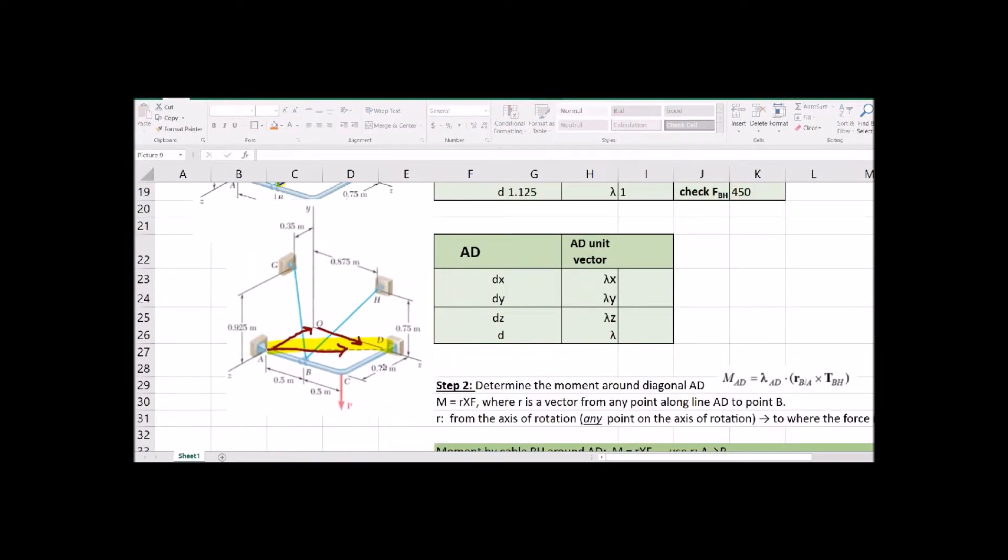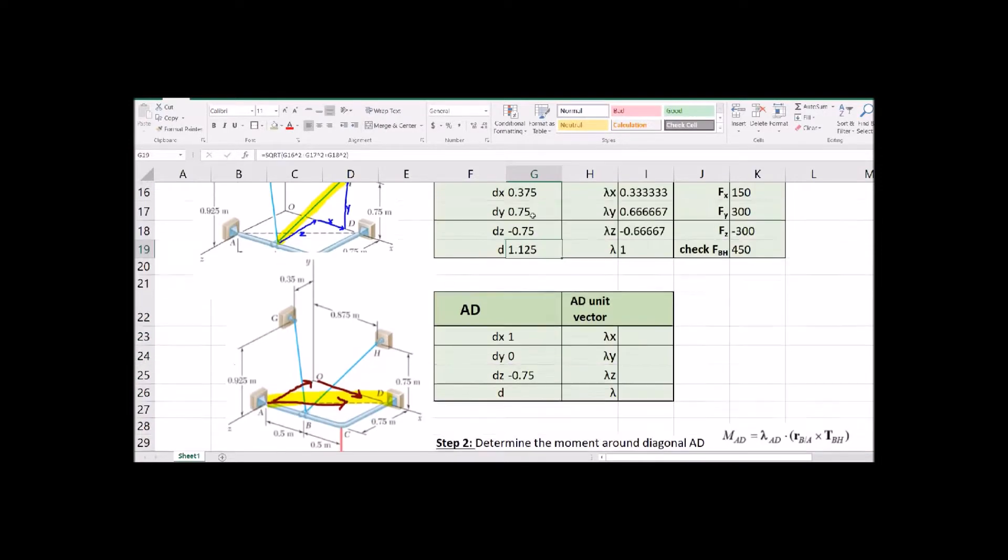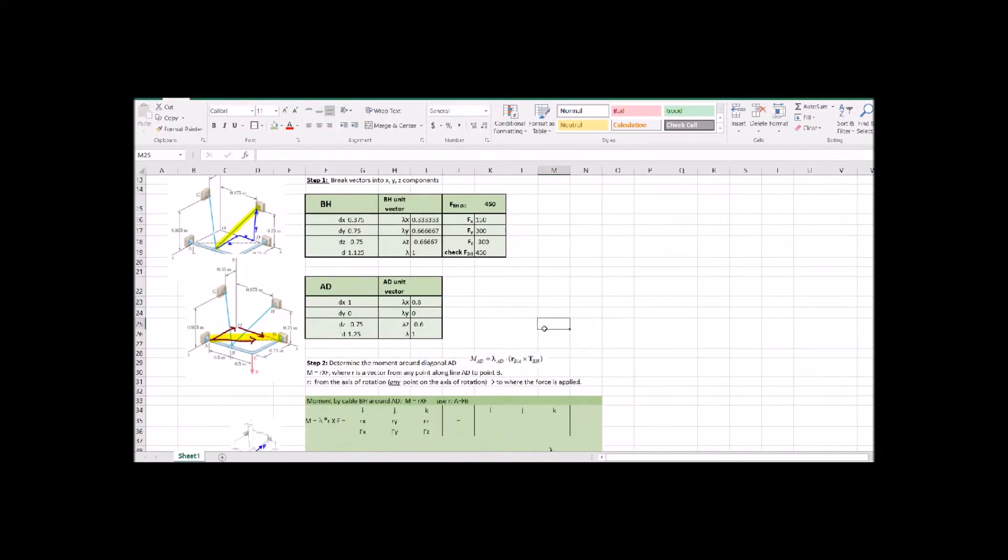We're also going to need the unit vector pointing in the direction of AD. So we want the moment around AD and we get the unit vector here. The same with any vector. So we're just looking at the DX, DY, DZ for the vector AD. And this time we just need the unit vector. We're not breaking up a force so we can leave it at the unit vector.